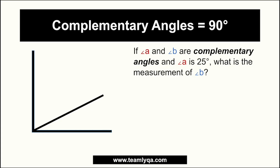If A and B are complementary angles and A is 25 degrees, what is the measurement of B? This is the type of question you can expect in exams. In the last video we talked about angles — when a ray is intersected by a line that is directly perpendicular to it, the angle formed is 90 degrees, and it's marked by that square symbol. So when you see that symbol, it means that part is 90 degrees.